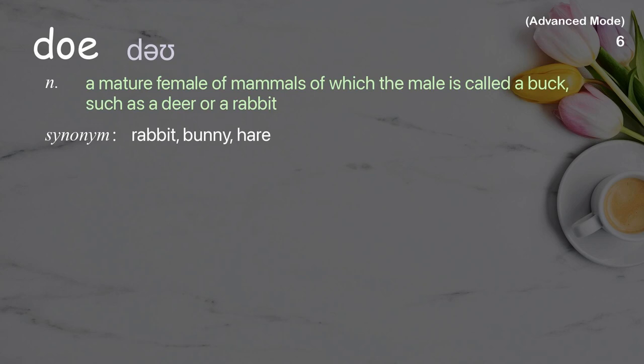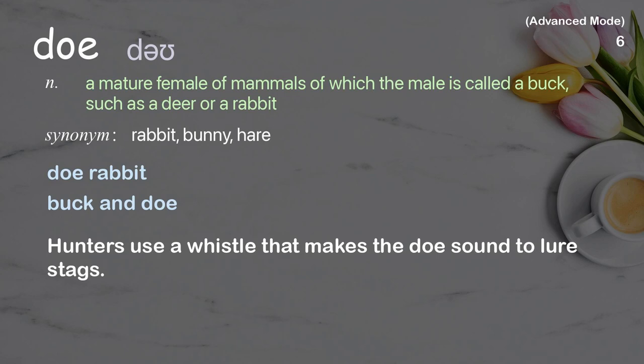Doe: a mature female of mammals of which the male is called a buck, such as a deer or a rabbit. Examples: doe rabbit, buck and doe. Hunters use a whistle that makes the doe sound to lure stags.